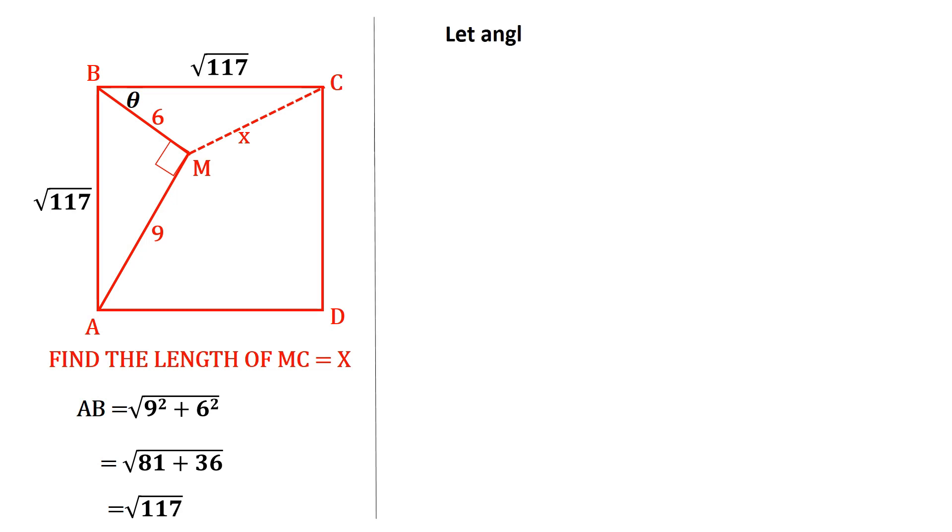Let's call angle MAB theta degrees and angle ABM alpha degrees. It follows that since one of the angles in triangle ABM is 90 degrees, then theta plus alpha has to be 90 degrees.